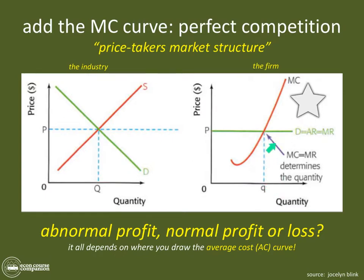Now let's look at unit 11. The cost of making that unit is up there, and if they produce it, they'll only get price P for it — so on that unit they'd lose money. At the point where MC crosses MR, the firm knows to stop, because one more unit would cost more than the additional revenue earned.